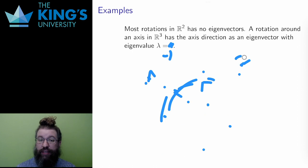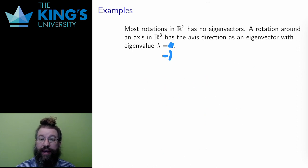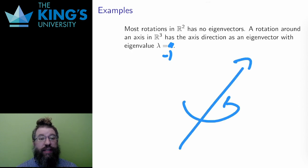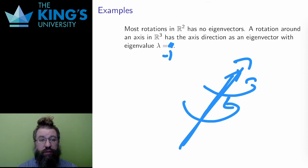the axis itself does not move. So any vector directly on the axis is fixed. That means that any vector along the axis is an eigenvector with eigenvalue 1, because eigenvalue 1 means no change.